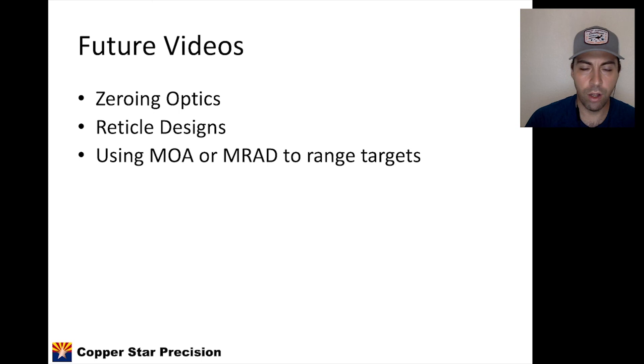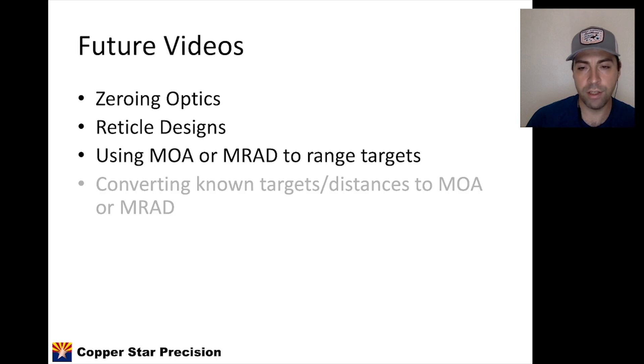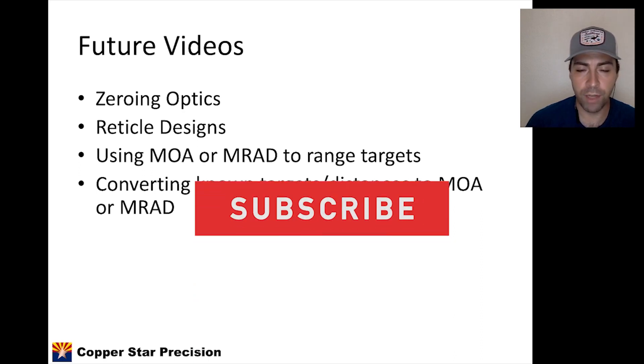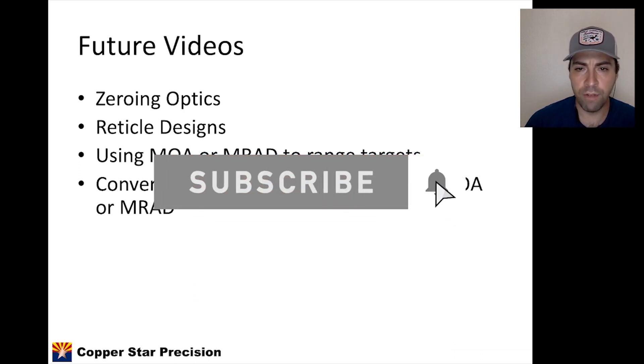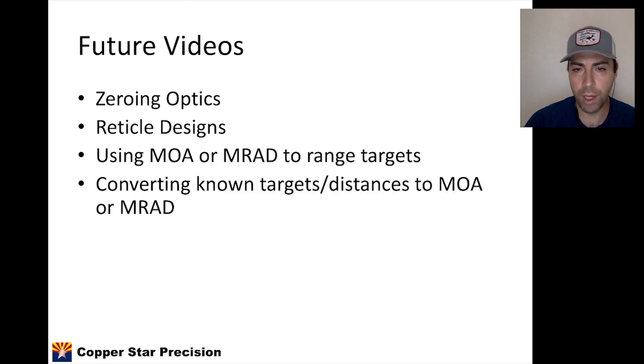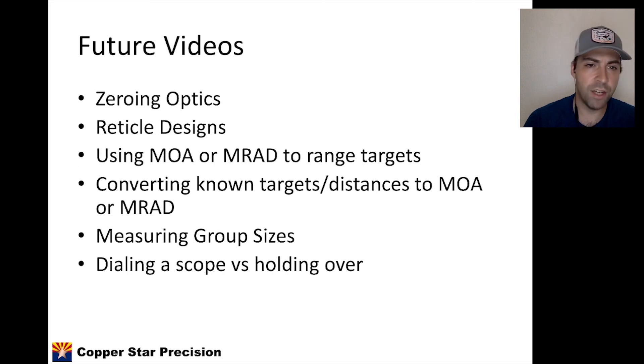We can use MOA or mils to range targets. So just by knowing what our scope is and knowing distance to the target or the size of the target, we can range that target or find out that target size. We can convert known targets and distances into MOA or MRAD, a very requested video on this channel, which I'll be posting next. So make sure you're subscribed to the channel for updates on that. I think that's going to be a pretty good video for everyone to get more points in the shooting disciplines, especially when it comes to PRS and NRL 22 type matches. We can measure group sizes, like I mentioned earlier. We can dial scope versus holding over. We'll talk about the advantages and disadvantages to those. And there's so much more.